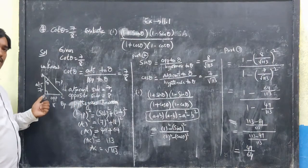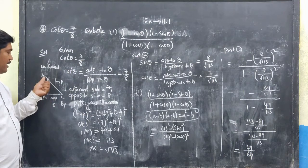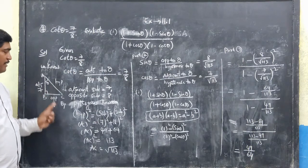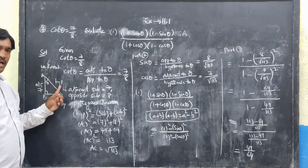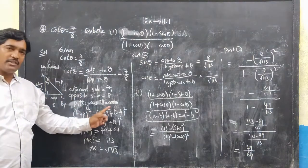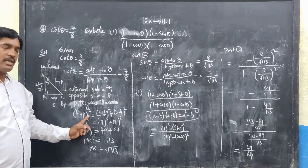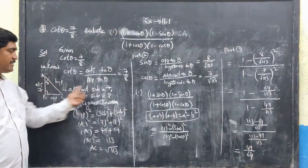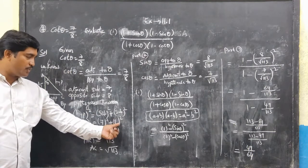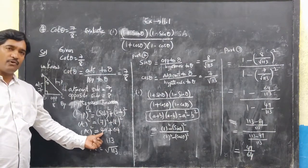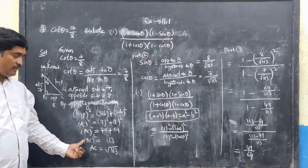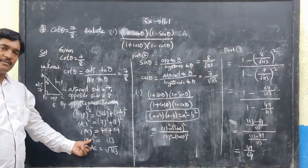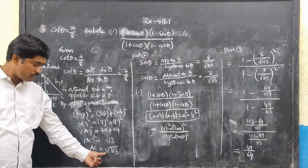Since two sides are given, I draw right angle triangle ABC with right angle at B and theta at A. The opposite is 8, adjacent is 7. I find the hypotenuse using Pythagoras: AC² = 7² + 8² = 49 + 64 = 113. So AC = √113. From the figure: sin theta = 8/√113 and cos theta = 7/√113.